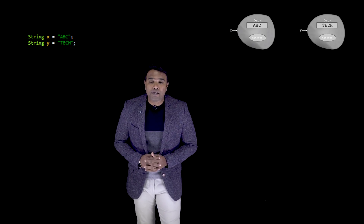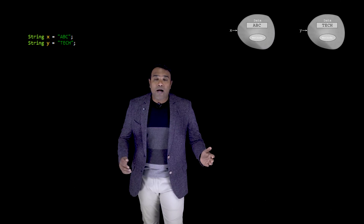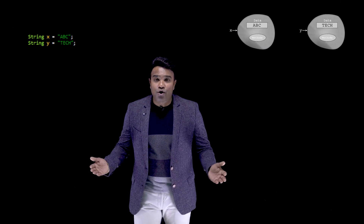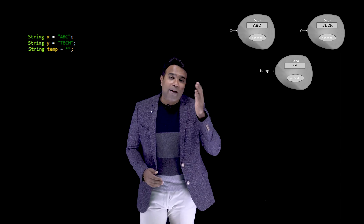Let me begin by creating a string object x with 'abc' as the data. This is the Java code for it, and in the form of an animation I can depict it like this. Similarly, I create a second string y with the data 'tech'. To perform the swap, I also need a third variable called temp, which I create as a string initialized to an empty string.